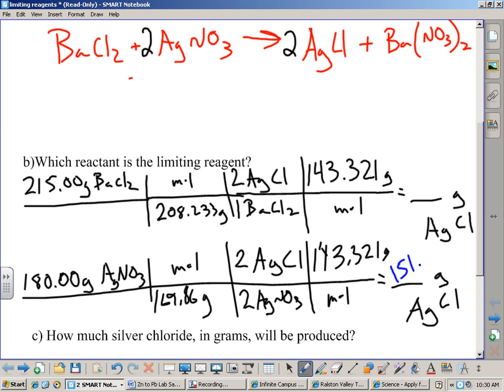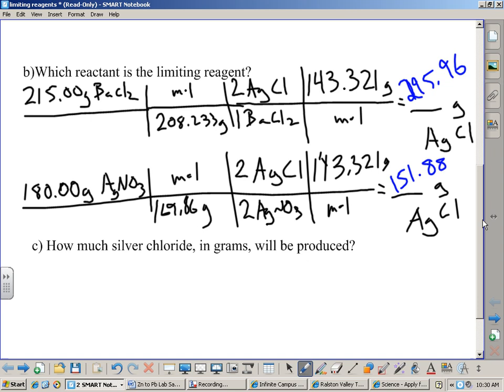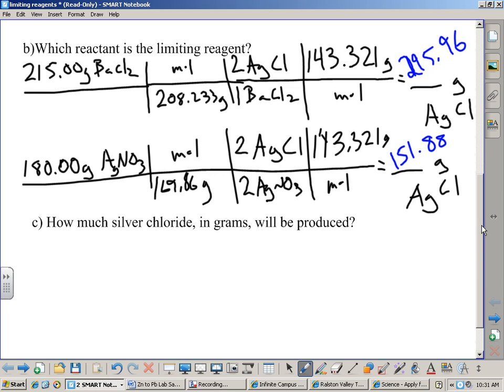All right. Let's get some answers up here to each of these problems. 151 point, we got 5 sig figs, 88. How about the top problem? What do we get for a number? 295.96. Excellent. So, we've done the work. Now we need to think for a minute here. The first problem that I have up on my smart board here. 215 grams of barium chloride will produce 295.96 grams of silver chloride. That's if we use all of that and have as much silver nitrate as we could possibly need, right?